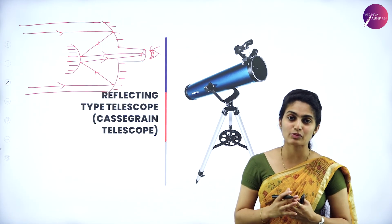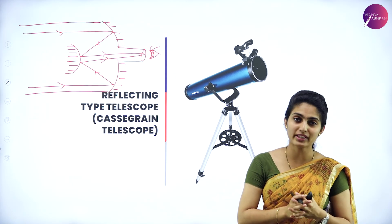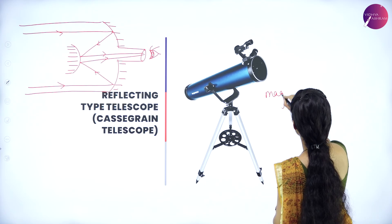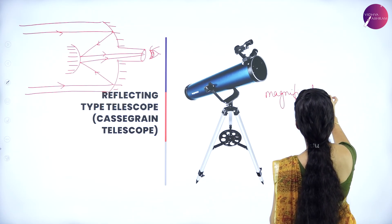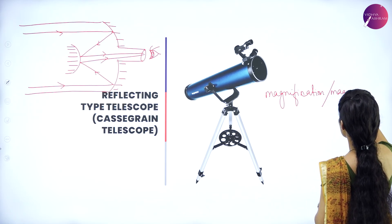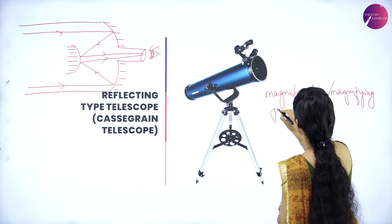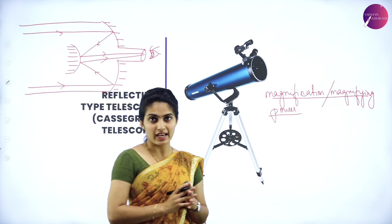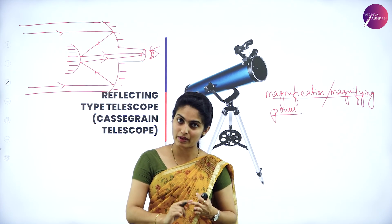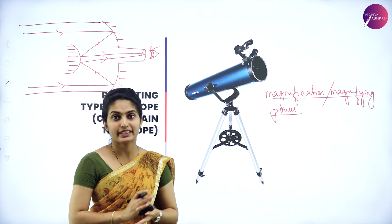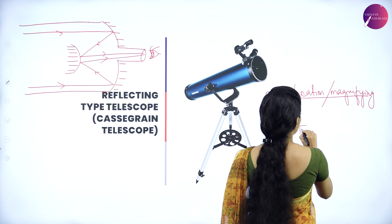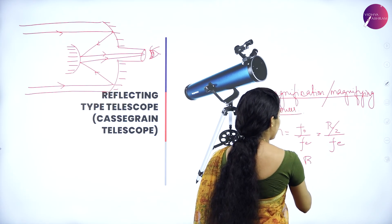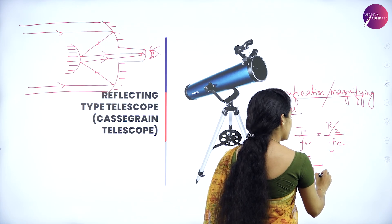The magnification of the reflecting (Cassegrain) telescope is also called magnifying power. It is given by M = F₀/Fₑ, where F₀ = R/2 (R being the radius of curvature of the primary mirror). So M = R / (2Fₑ). That is all about the magnification of the Cassegrain reflecting telescope.